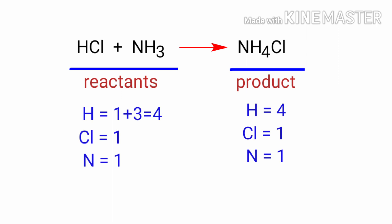If you look at this equation, the number of atoms on the reactants side are the same as the number of atoms on the product side. There are 4 hydrogen atoms, 1 chlorine atom, and 1 nitrogen atom on both sides. So we don't need to balance this equation because it is already balanced.